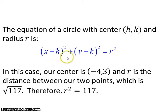So in this case, our center is the first point, which is negative 4, 3. r is the distance between the two points because when we think of a circle, our line segment is now going to be a radius of that circle because the first point is the center and the second point lies on the circle.